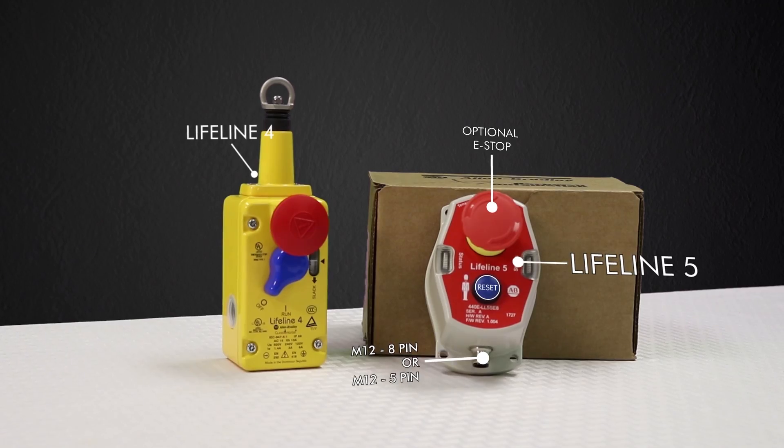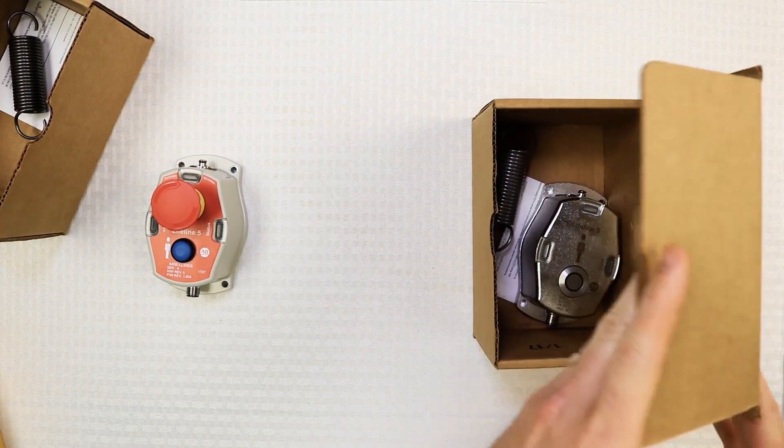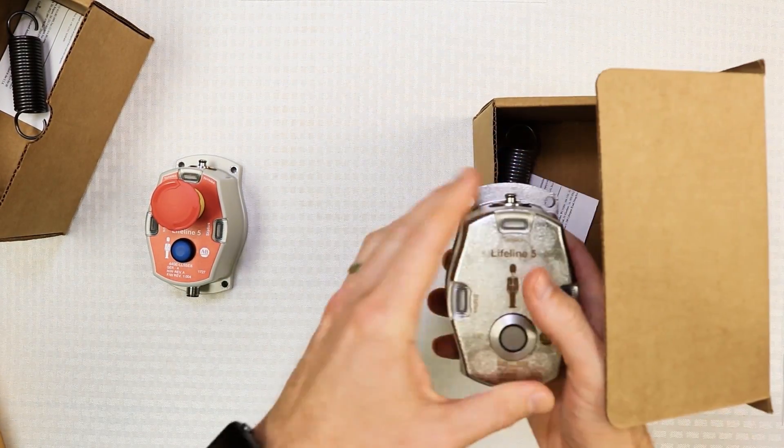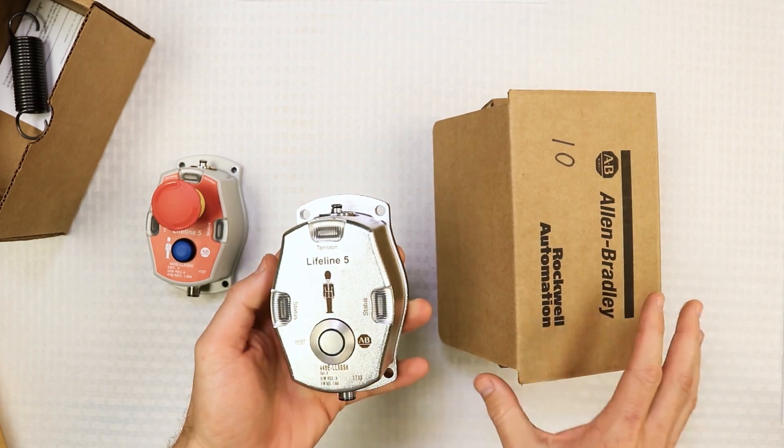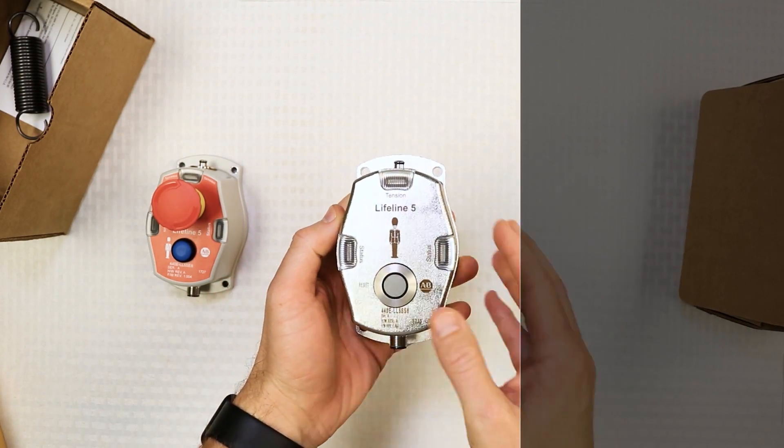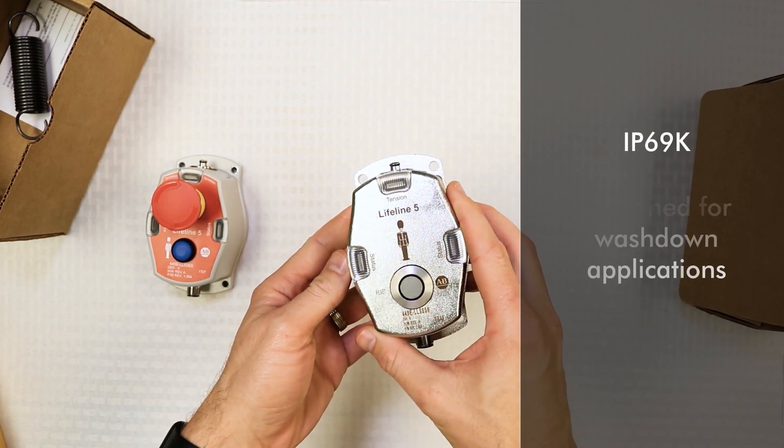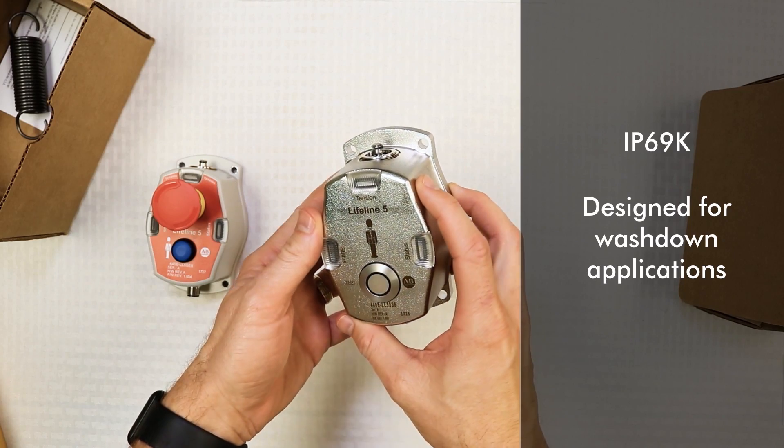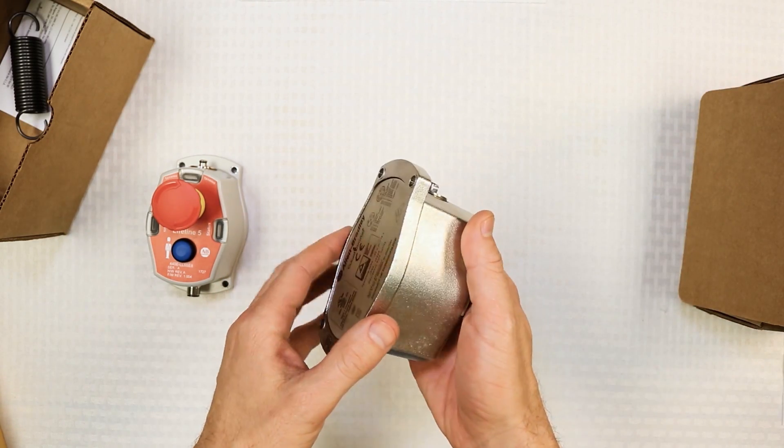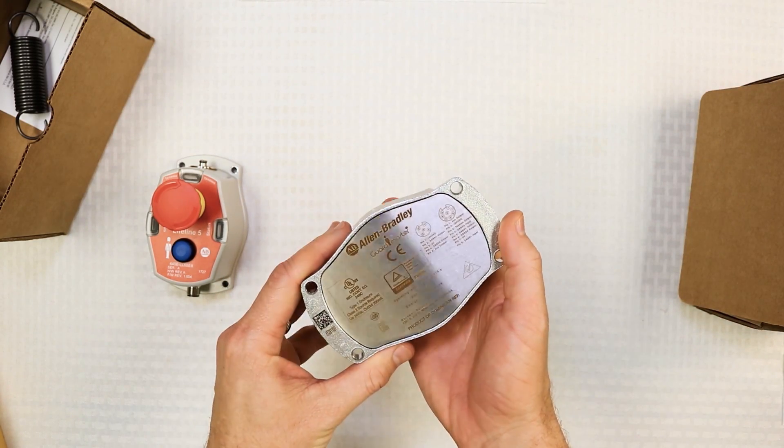Now let's check out what's in the other box. Oh, no way! It's an all stainless steel version with reset and it has an IP69K rating designed for washdown applications. It is solid, very smooth, and feels like a mini tank.